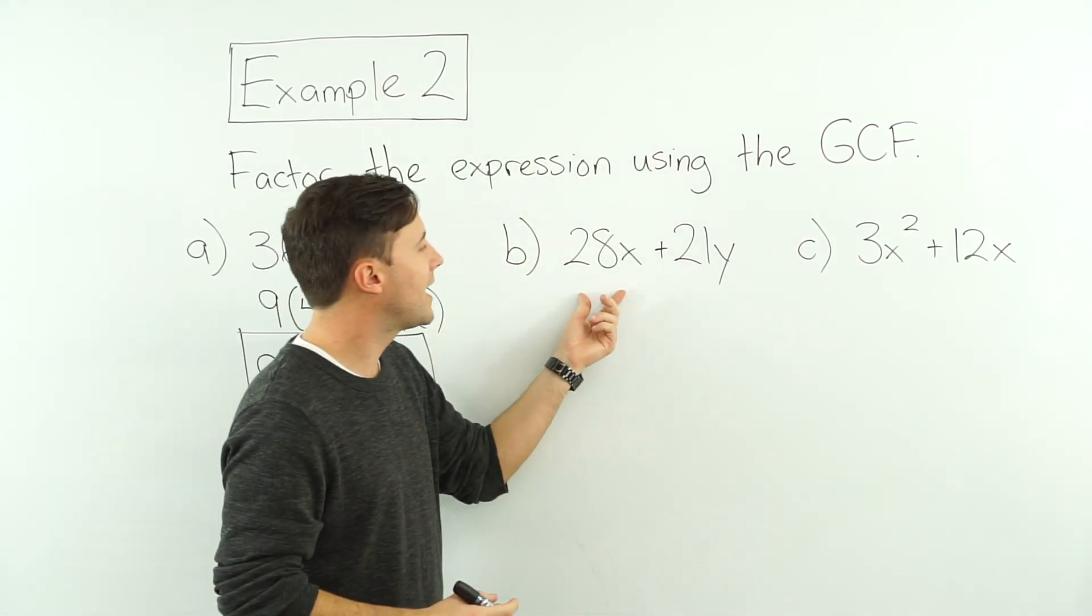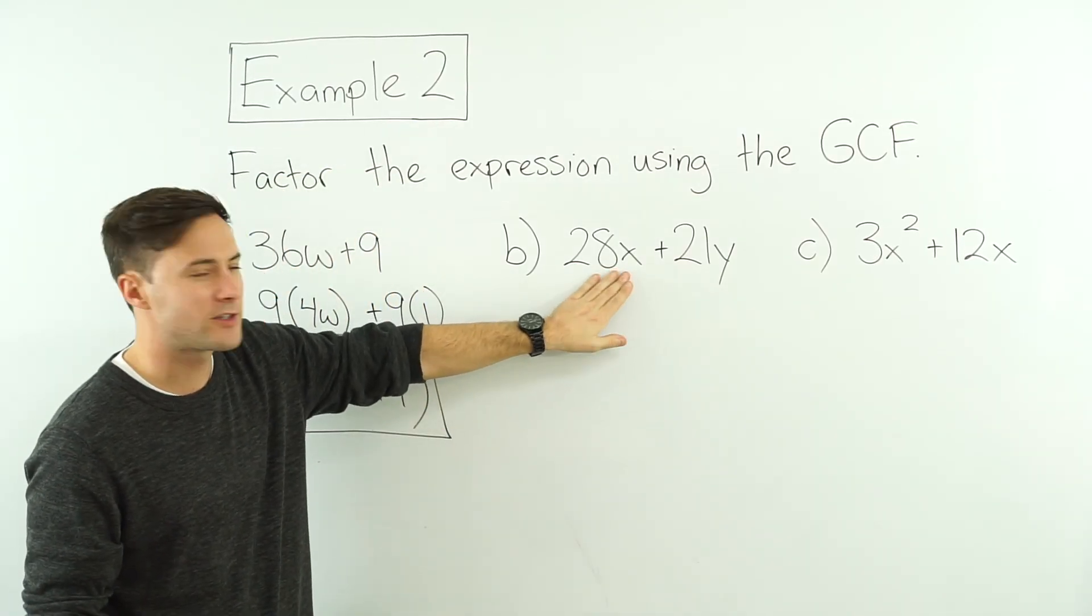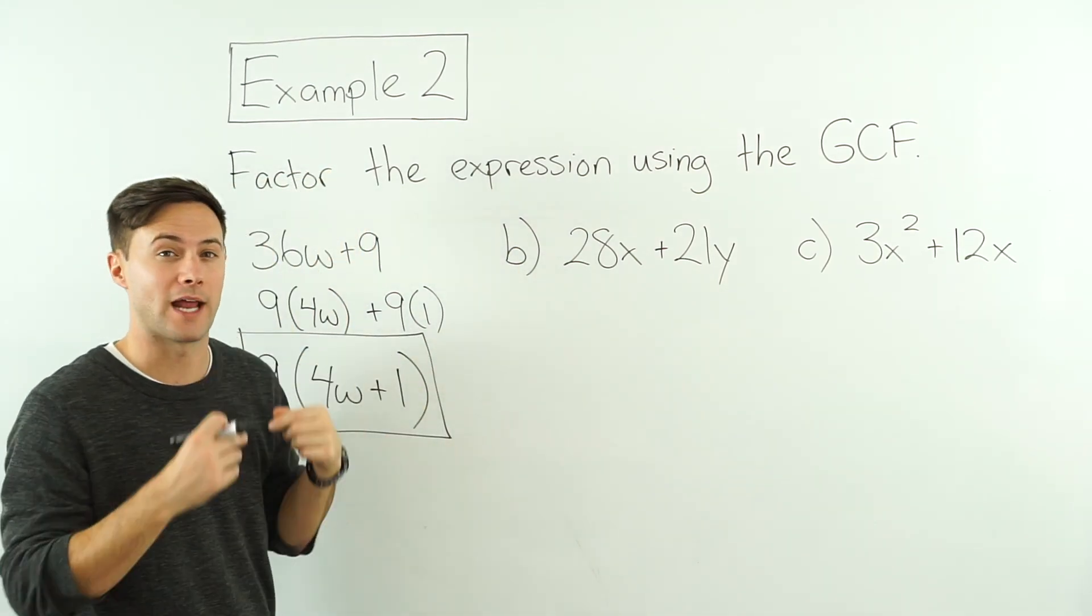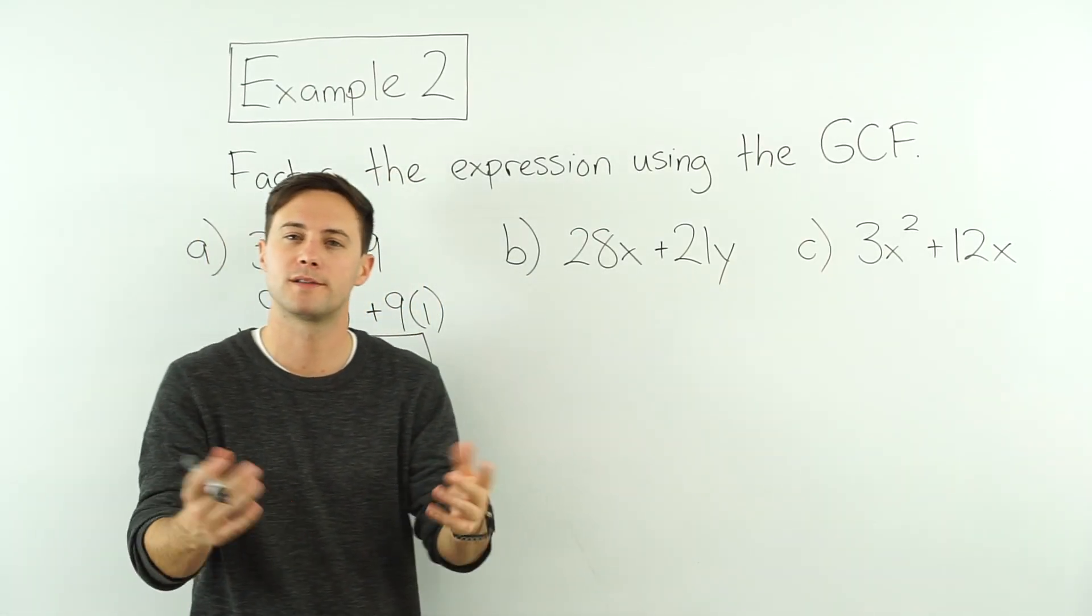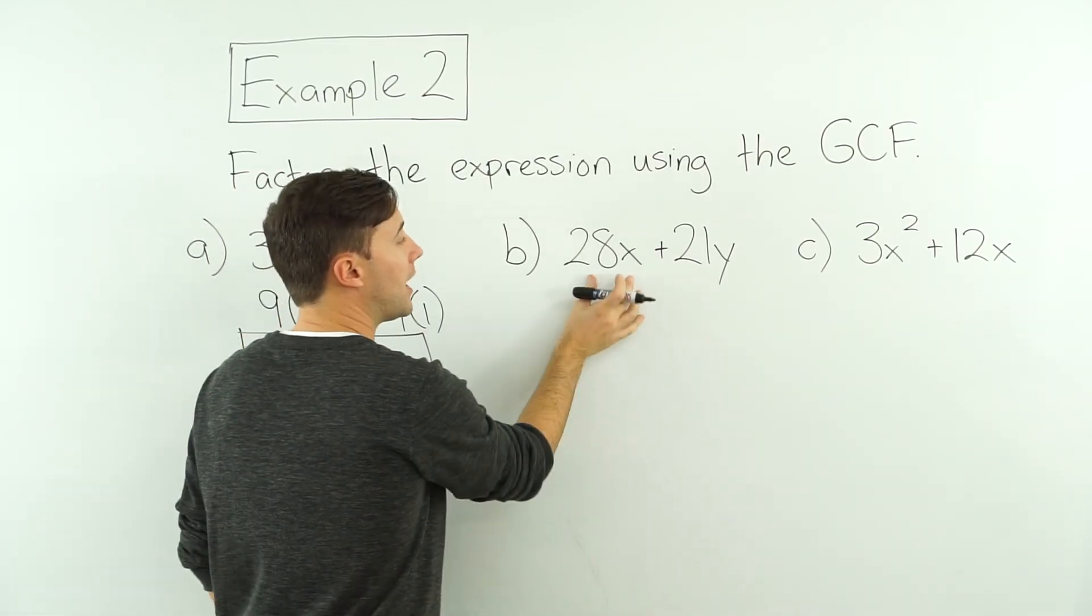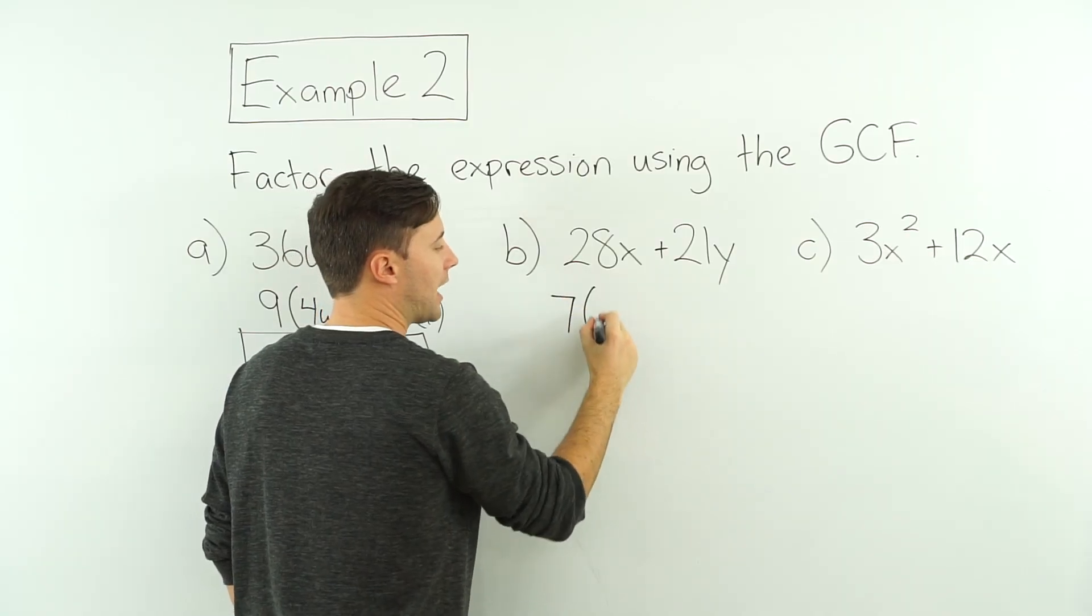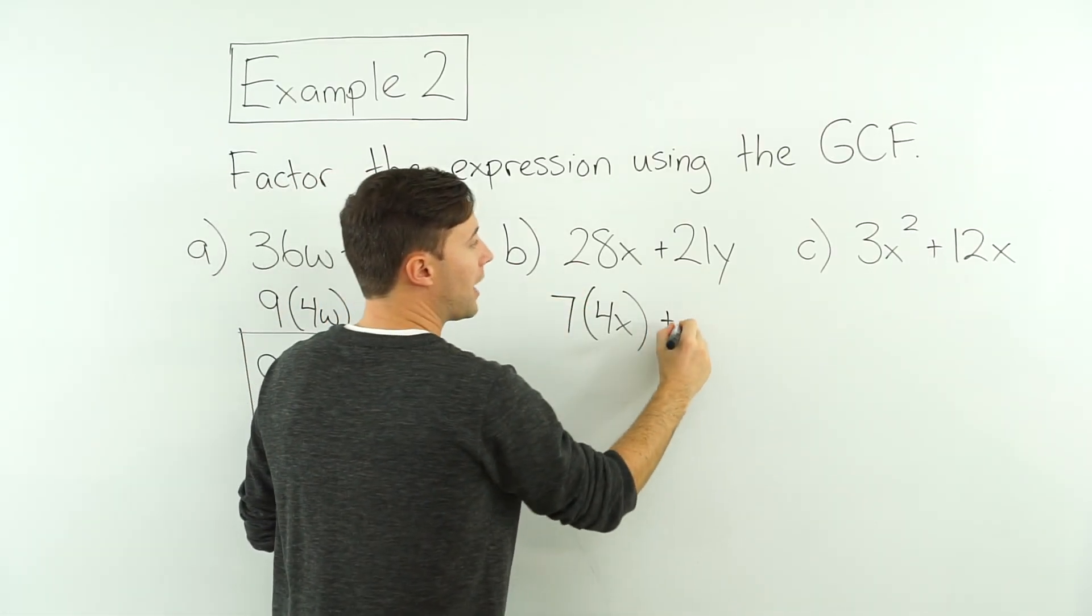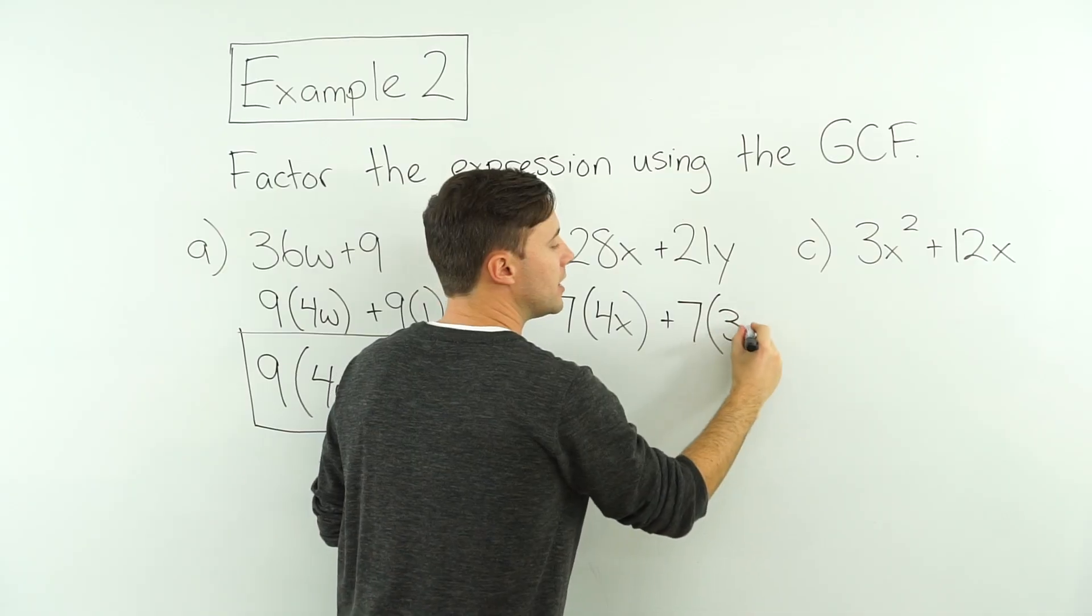28x plus 21y. Again, this term has an x, this term has a y. So those are not going to be part of what I'm factoring out. I'm just going to focus on the 28 and the 21. What's the greatest common factor of 28 and 21? 7. So 28x I'm going to think of as 7 times 4x. 7 times 4x is 28x. Plus the 21y, 7 times 3y.